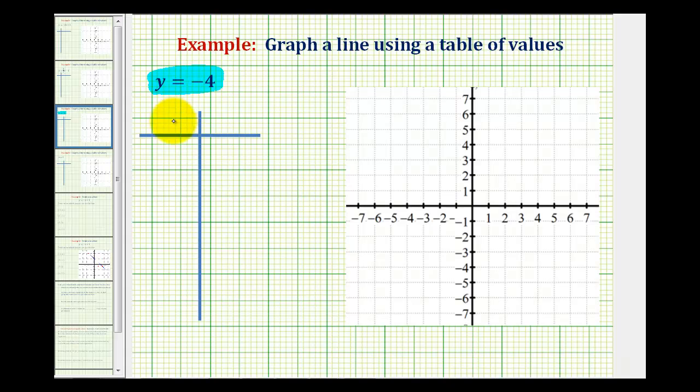Let the first column represent possible x values and the y column represent possible y values. What's different about this equation is that it's telling us y must equal negative 4. So whatever x value we select, y must be negative 4. Let's record negative 4 in the y column three times.